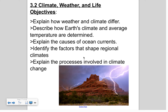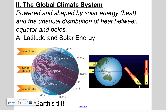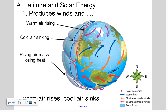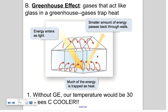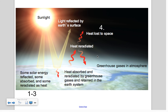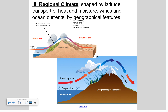Today I'm going to talk about regional climates and some processes involved in climatic changes. Regional climate is shaped by a lot of different factors depending on location — it could be shaped by latitude, whether it's at mid-latitude, near the equator, or somewhere in between.